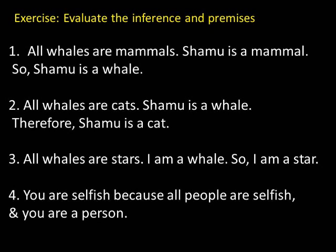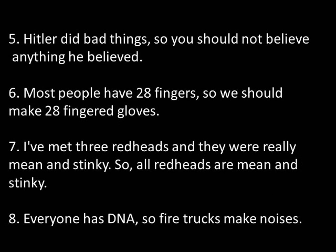Argument two has a good inference because the conclusion must follow if we assume the premises are true; however, you would still reject this argument because the first premise 'all whales are cats' is obviously false. Argument three has a bad premise but a good inference. Number four has a dubious premise — 'all people are selfish' is debatable — but a good inference. Number five has a reasonable premise but a faulty inference: even if Hitler was bad, the conclusion doesn't follow because Hitler held some true beliefs, so this is an ad hominem or guilt by association fallacy.